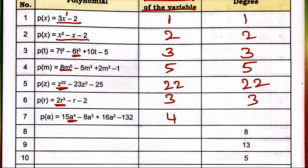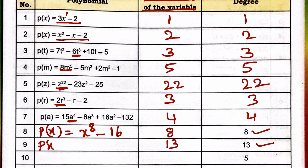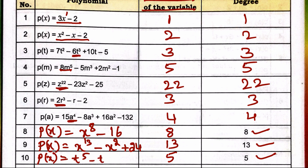If the degree is 8, the highest power is also 8 — we can write p(x) = x⁸ − 16. If the degree is 13, the highest power is 13 — so p(x) = x¹³ − x² + 24. If the degree is 5, we can write t⁵ − t⁴ + 8.